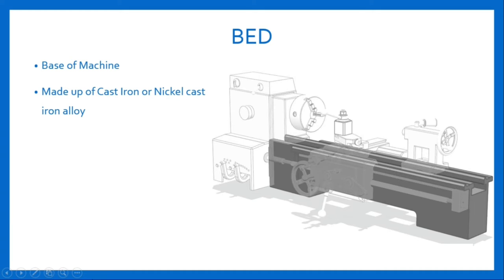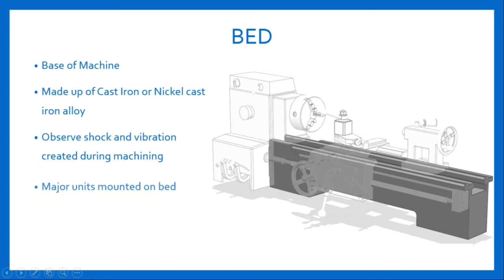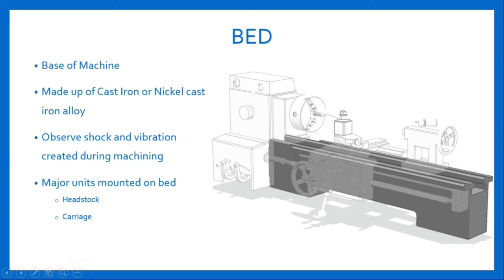To ensure accurate machining work, it is necessary that the bed has enough rigidity and torsional stiffness to withstand the action of cutting force. The bed is made up of cast iron to absorb shock and vibration created during machining. The three major units mounted on bed are headstock on the left end, carriage in the middle, and tailstock at the right end of the bed.